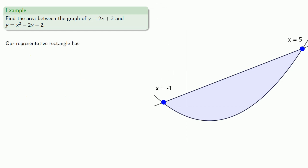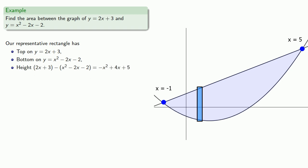We draw our representative rectangle. The top is on the line y equals 2x plus 3, and the bottom is on the parabola y equals x squared minus 2x minus 2. The height is top minus bottom, the width is dx, so the rectangles have area negative x squared plus 4x plus 5, times dx.